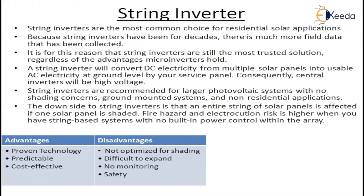Central inverters have a high voltage. The string inverter collects all the power from multiple solar panels and converts it to AC at the ground level — it is not fitted near the panels. The string inverter is recommended for large photovoltaic systems with no shading concerns and for ground-mounted systems.